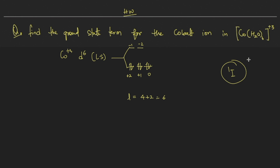Many people get confused about whether it will be low spin or high spin. To be very clear: cobalt in the +3 oxidation state with any nitrogen or oxygen donor ligand — such as NH₃, EDTA, water, or oxalate — always behaves as a low spin complex. That's why it fills like that and that is the correct answer.